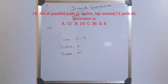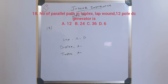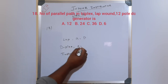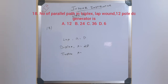The number of armature parallel paths in a triplex lap wound 12-pole DC generator: in a simple lap wound generator, the number of parallel paths equals the number of poles (P). For duplex lap winding, it is 2P. For triplex lap winding, it is 3P. With 12 poles, the number of armature parallel paths is 3 × 12 = 36. Option C is 36.